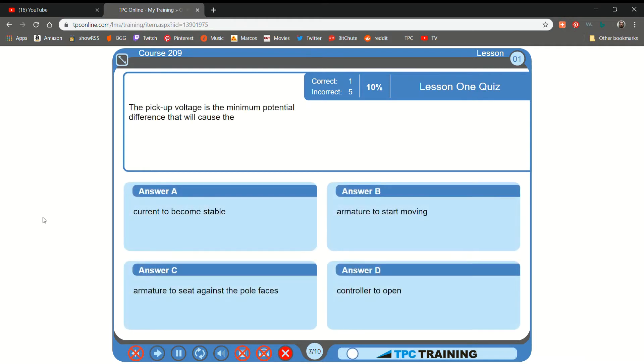The pickup voltage is the minimum potential difference that will cause the... A. Current to become stable... B. That is correct.